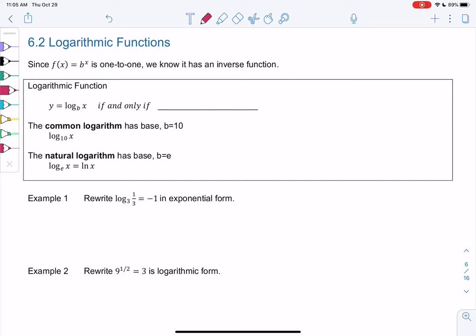Section 6.2, logarithmic functions. Feel free to call them logs for short. Since f of x equals b to the x is one-to-one, we know it has an inverse function. If we have one-to-one, then we can find an inverse. And that's what logs are.